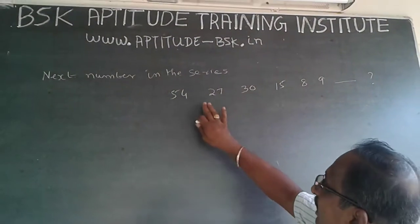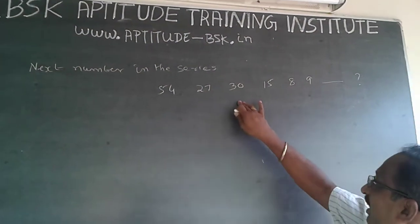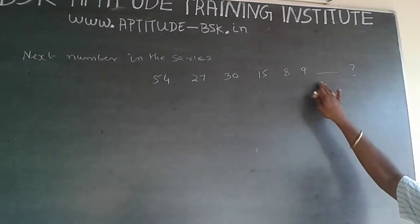The question is, next number in the series is 54, 27, 30, 15, 8, 9, dash.